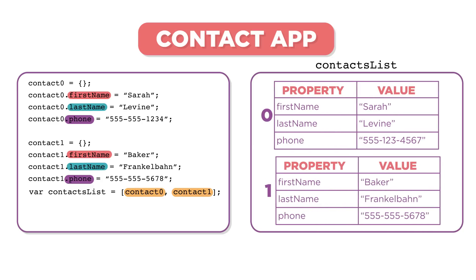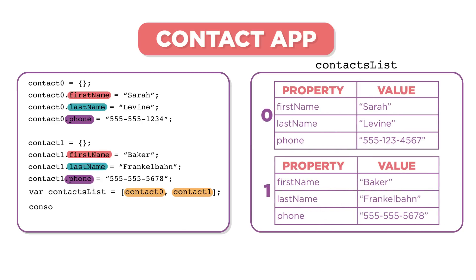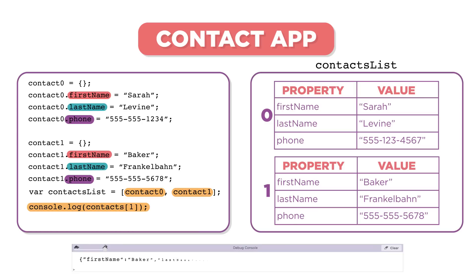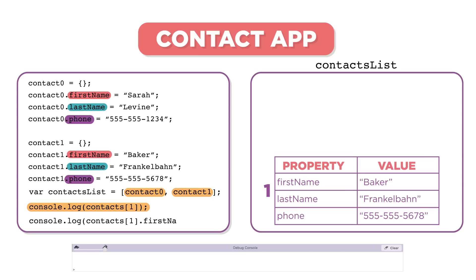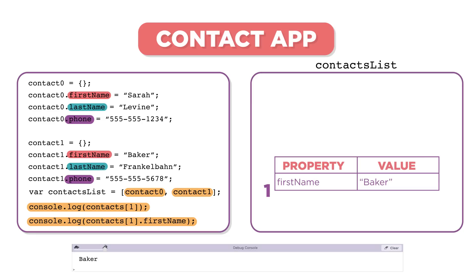To access individual objects in our list, we can use bracket notation. Here we're displaying the object stored at index one. If we want to access individual properties of an object, we can combine bracket notation and dot notation. Here we are displaying only the name of the contact.